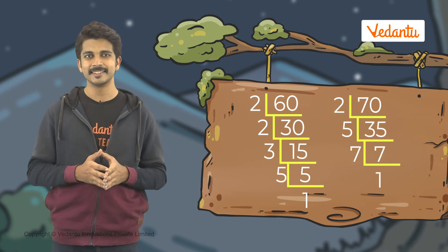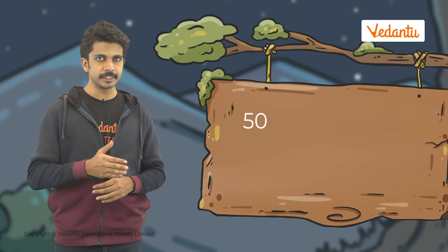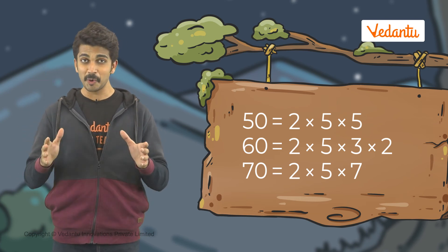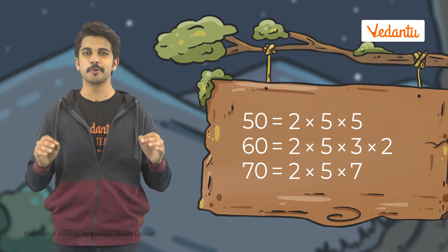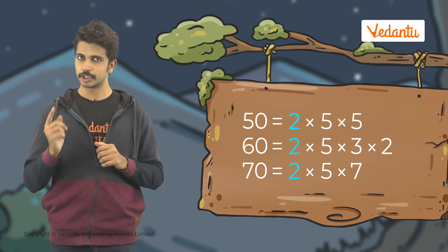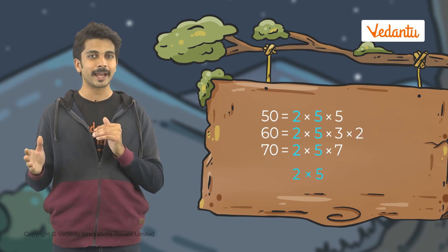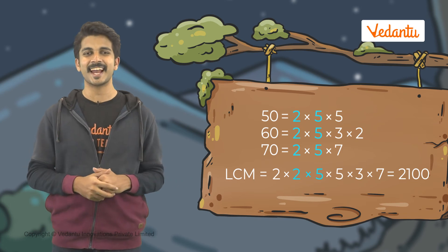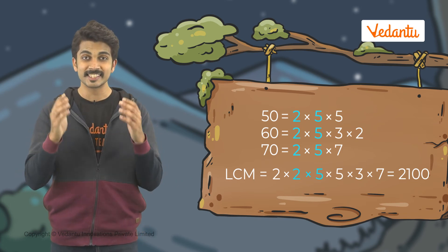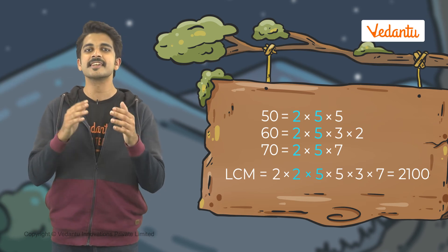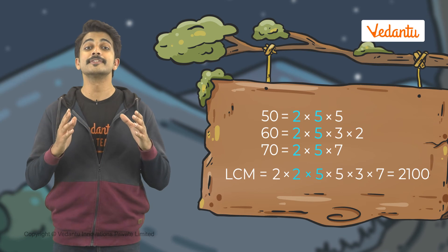Similarly, we perform the same steps for 60 and for 70. Step 3: write 50, 60, and 70 as the product of their prime numbers. Step 4: select the prime factors which are common for any two or more given numbers. We see 2 and 5 are common factors for 50, 60, and 70, so we write them only once, then multiply with the remaining numbers which are 2, 3, 5, and 7. And that's how we get the LCM. The LCM of 50, 60, and 70 is 2 × 2 × 5 × 5 × 3 × 7, which is 2100.